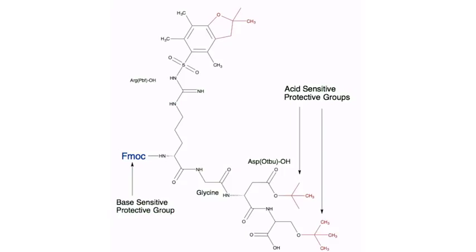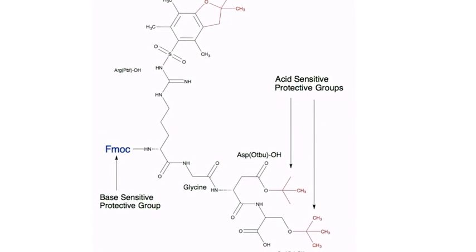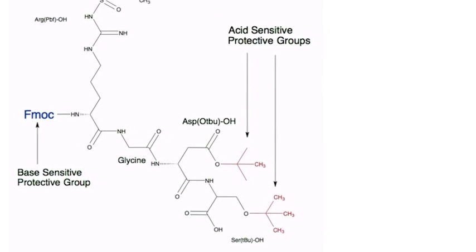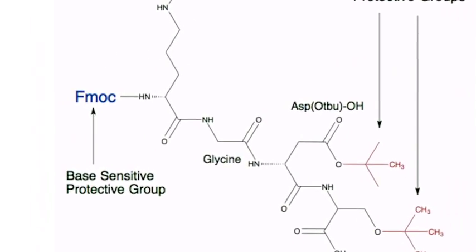In order to attach our amino acids together, we must take away certain protective groups that are present on each amino acid. There are different kinds of protective groups, ones that come off in acidic solution, and others in basic solution.